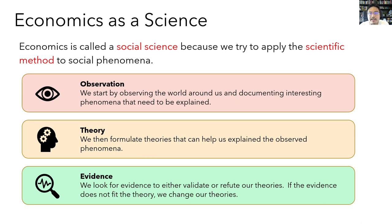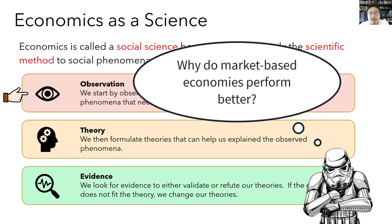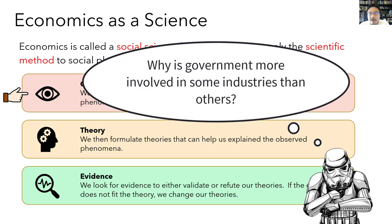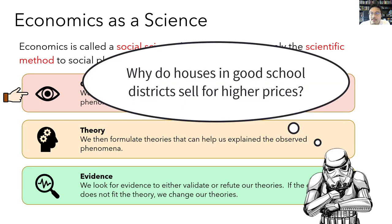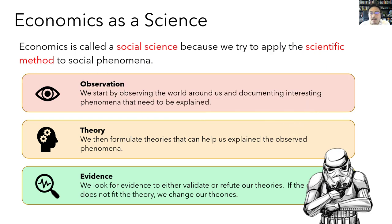Economics is called a social science because economists try to study social phenomena — such as human decision-making or the allocation of resources — using the scientific method. A simple way to break it down is into a threefold process of observation, theory, and evidence. The study of economics begins by observing the world around you and noticing interesting phenomena that require explanation. For example, you might ask: why have market-based economies historically performed better than centrally planned ones? Or why are governments more involved in some industries like healthcare and education than in others like computers or automobiles? Or why do houses in good school districts often sell for higher prices?